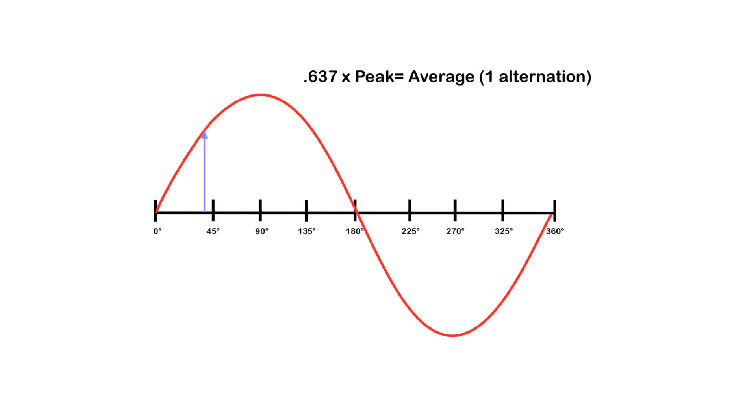Now, when we're talking about the average value for one alternation, that's different because we have either a full-on positive value or a full-on negative value because we're only talking from 0 to 180 or from 180 to 360. And in that case, we can use the formula 0.637 times peak equals the average for one alternation.